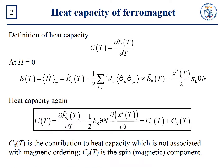By definition, the heat capacity of a ferromagnet is the derivative of internal energy with respect to temperature. At zero magnetic field we have the following expression. Therefore, the expression for heat capacity takes the following form, where C0 is the contribution to heat capacity which is not associated with magnetic ordering, and Cs is the spin magnetic component.